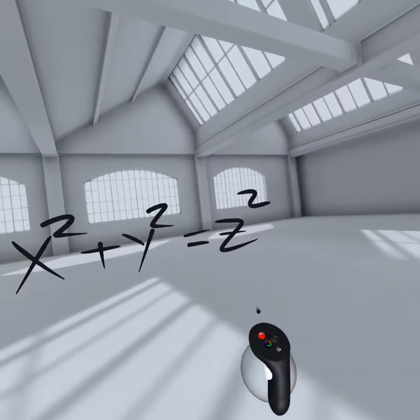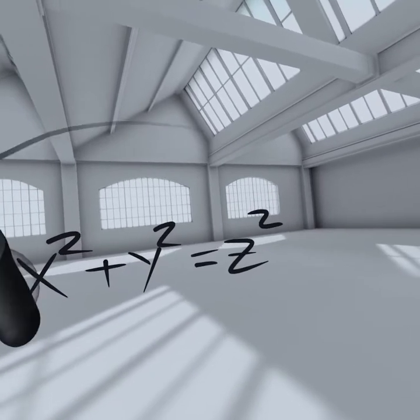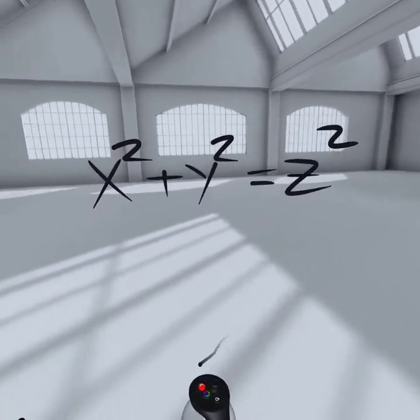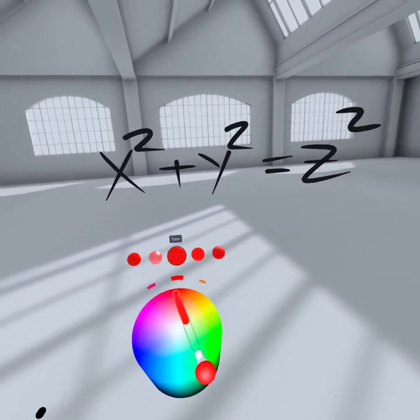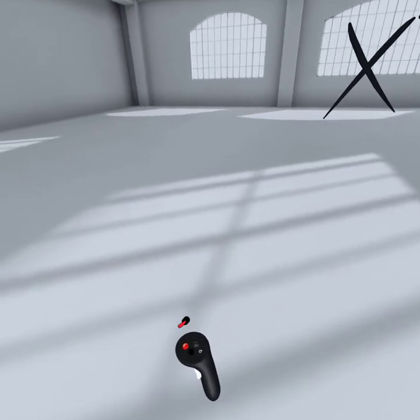x squared plus y squared equals z squared. What kind of shape does this describe?